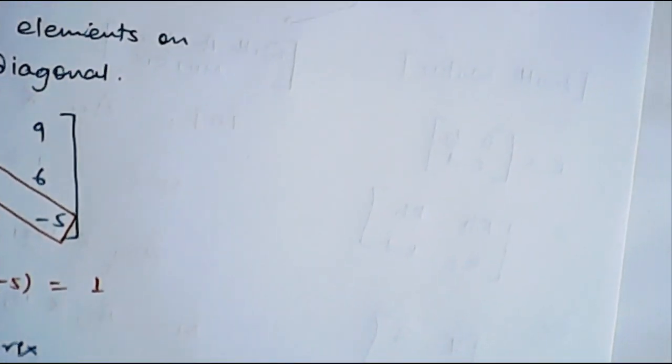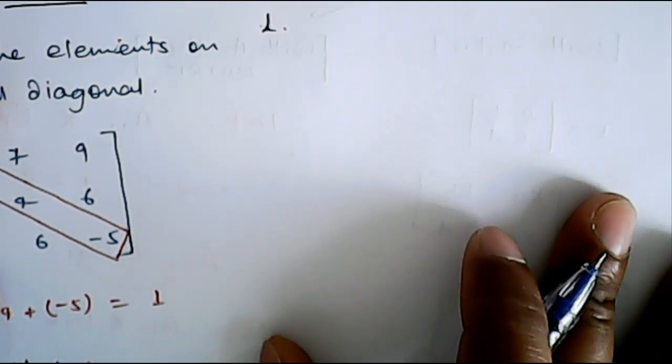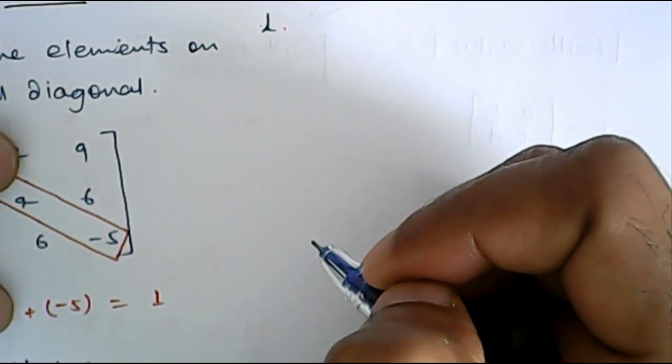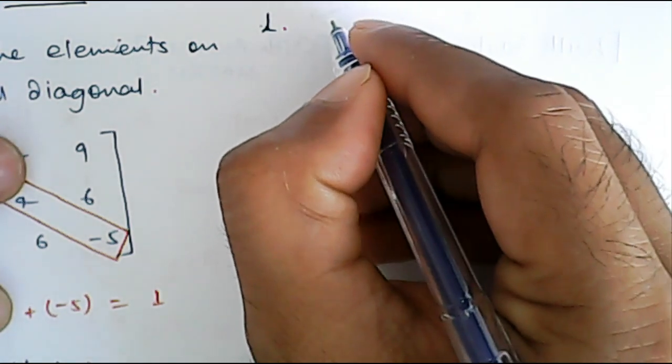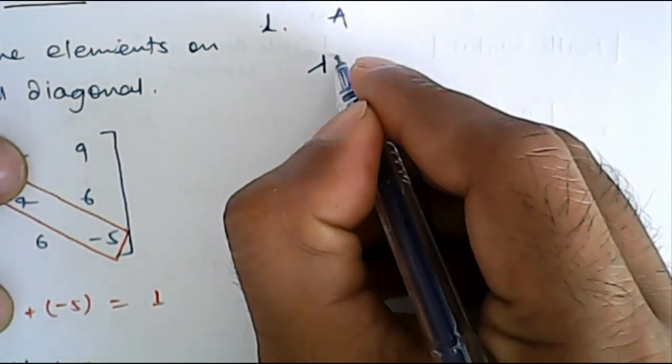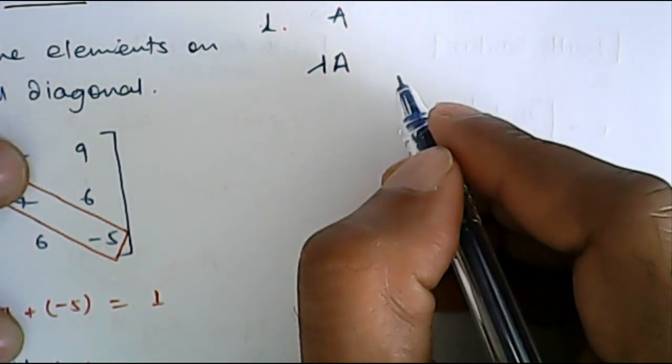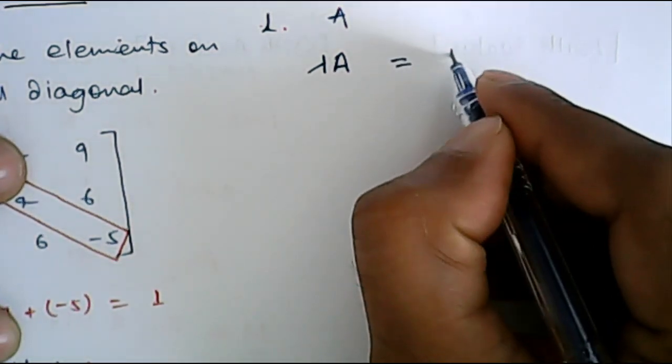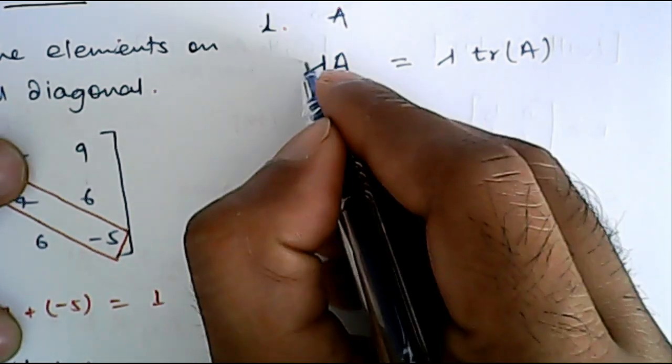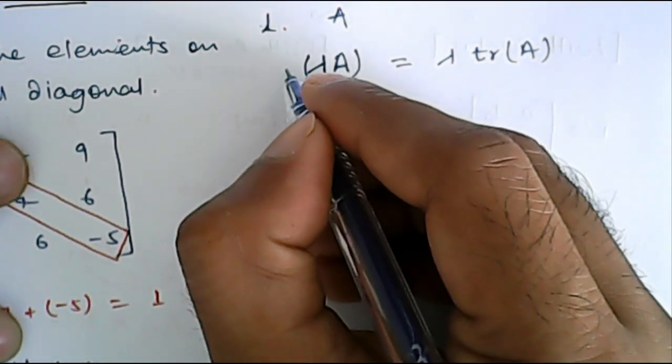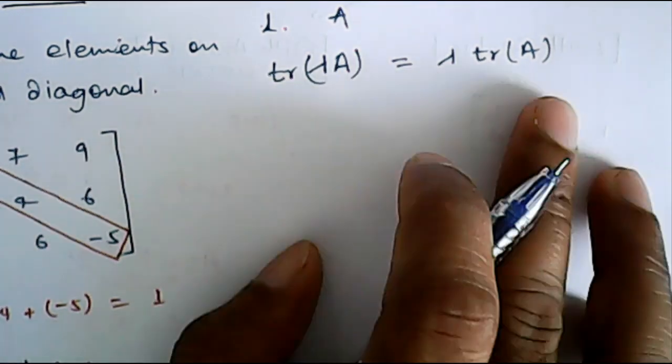The properties are very simple. The first property is, when we multiply matrix with a scalar, the trace is also multiplied with that scalar. What I want to say here is, for a matrix A, if we have lambda A, then the trace will become lambda times of trace of A. So trace of lambda A is equal to lambda times the trace of matrix A.